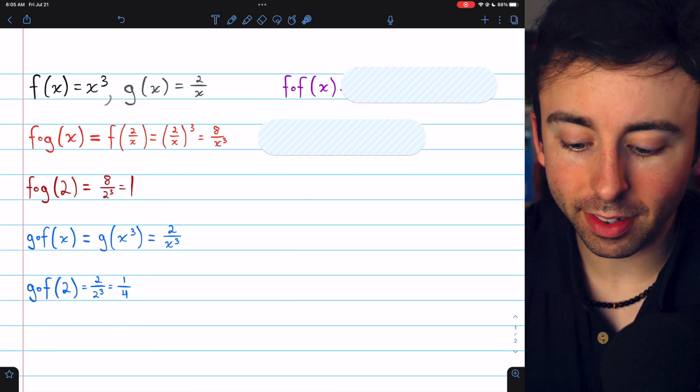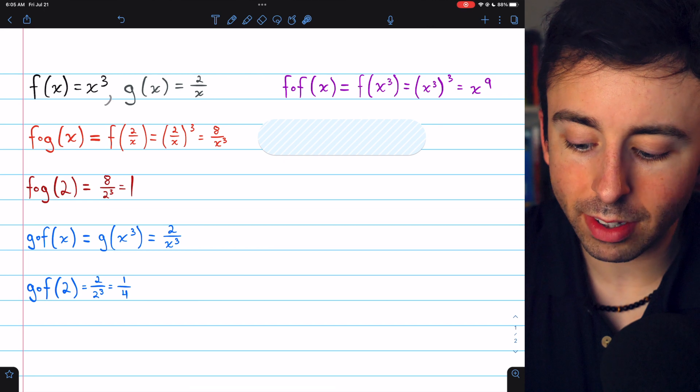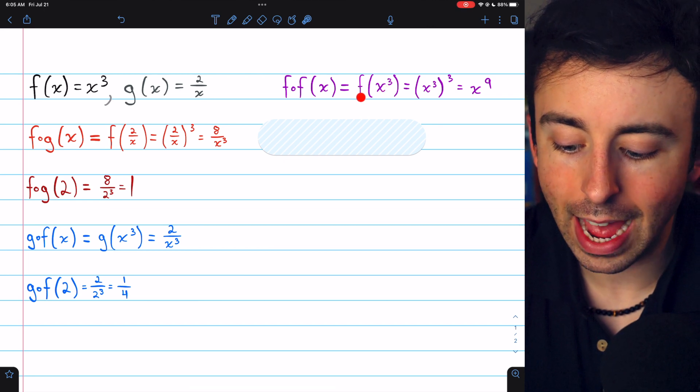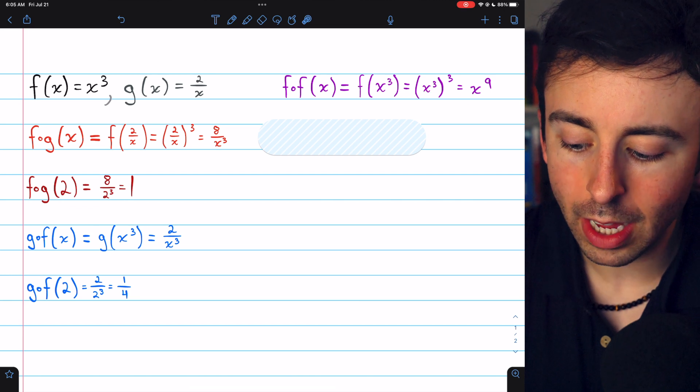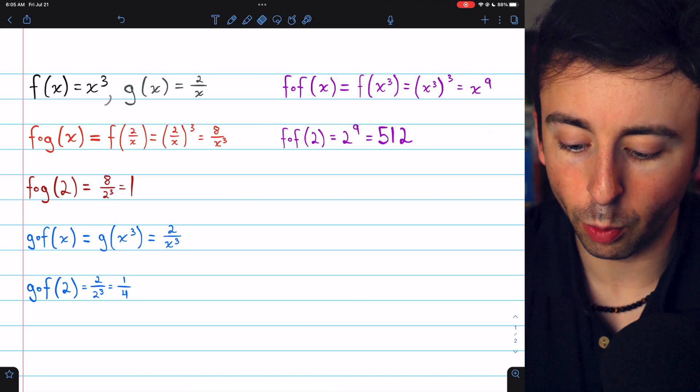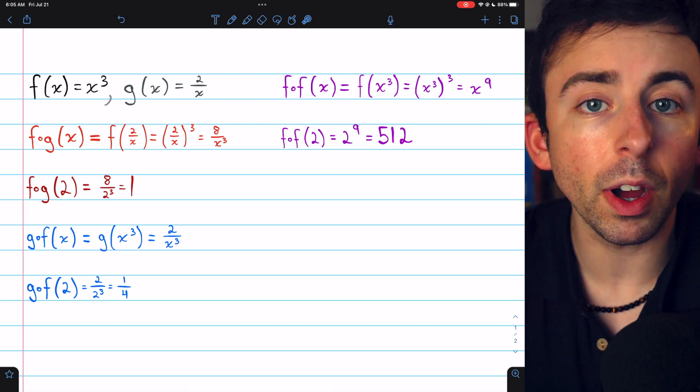f of f of x can be found in a similar way. f(x) is x³, so we simply plug x³ into f. f cubes the input, and (x³)³ is x⁹. Thus, for example, f(f(2)) would be 2⁹, which is 512.